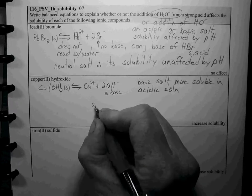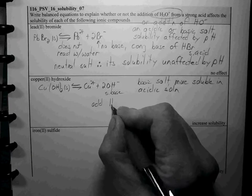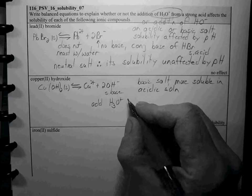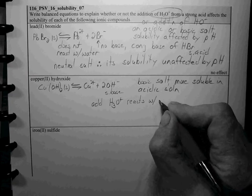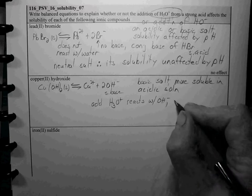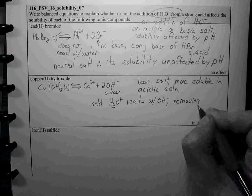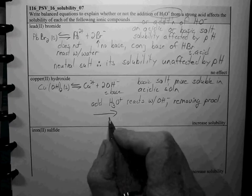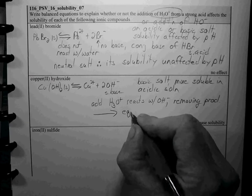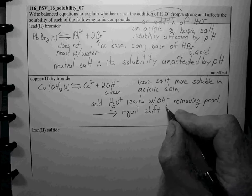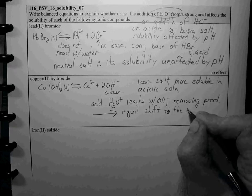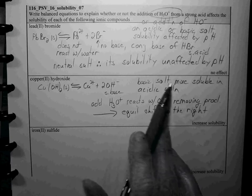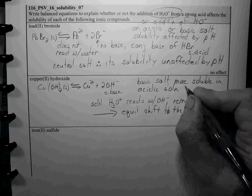If we add H3O+, the H3O+ is going to react with hydroxide. So essentially what it's doing is removing a product. We know from Le Chatelier that if we remove a product that causes an equilibrium shift to the right, which is why basic salts are more soluble in acidic solution than pure water.